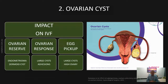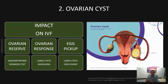Next is ovarian cysts. Depending on the type and size of ovarian cysts, they can have a significant impact on the IVF treatment cycle. Large endometriotic cysts like endometrioma and also dermoid cysts can significantly reduce ovarian reserve. Again, treatment for this type of ovarian cysts can reduce ovarian reserve even further.